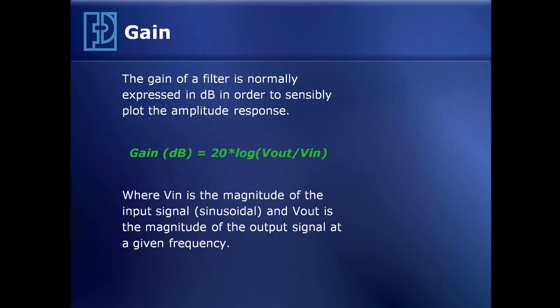The term gain, which I've already used in this presentation, is expressed in decibels — that's to sensibly plot very wide ranges of gain on a compressed scale. Voltage gain in decibels is 20 times the log to the base 10 of the output voltage divided by the input voltage in the filter. These voltages are represented in terms of the magnitude of the input and output sinusoid placed through the filter at a given frequency.